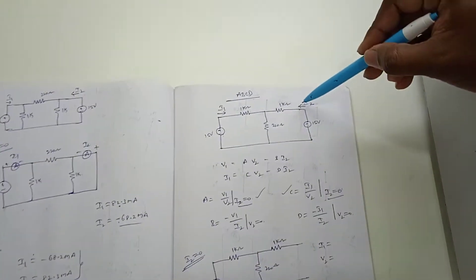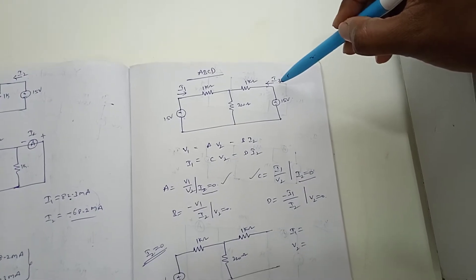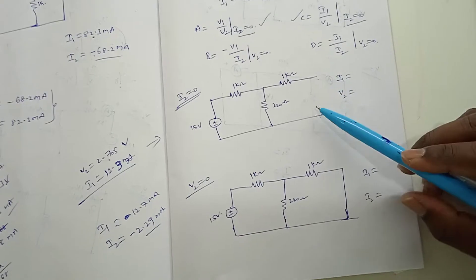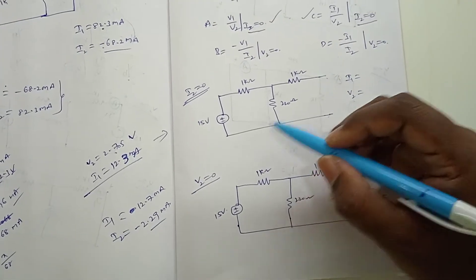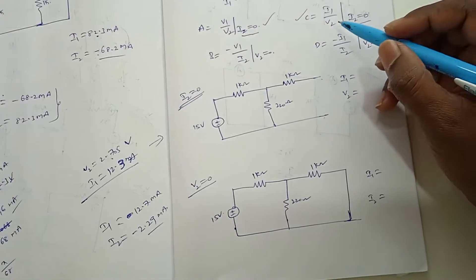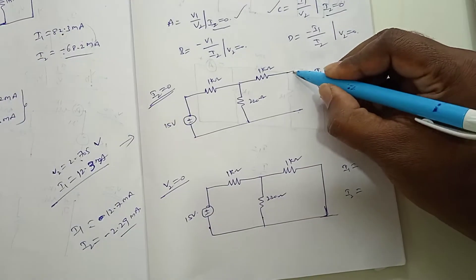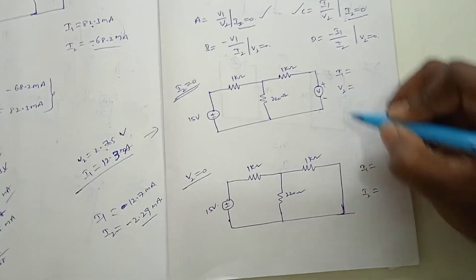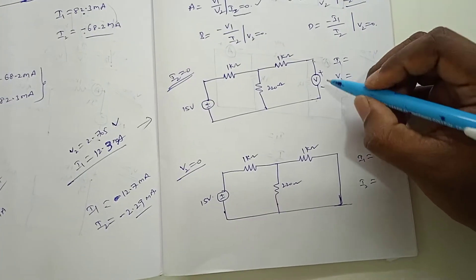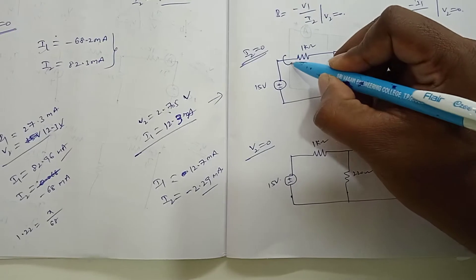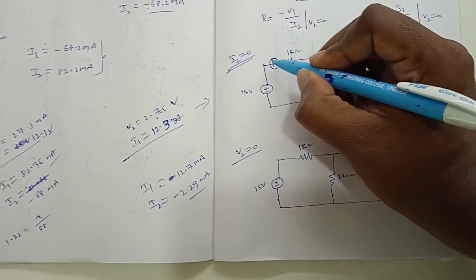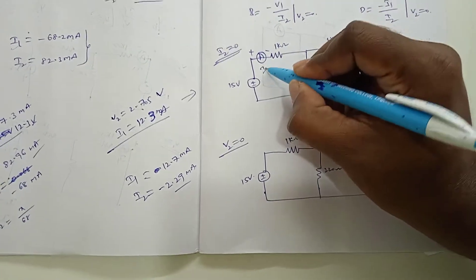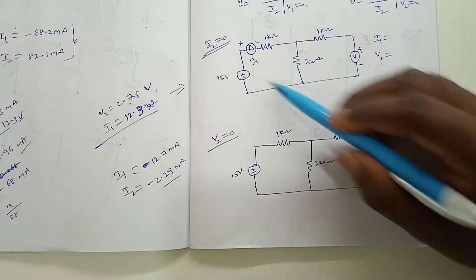When I2 equals 0, that means this current I2 should be zero, so the output port should be open circuited. We need to measure V1 and V2, so we place a voltmeter here with plus and minus — this will measure V2. We also need to measure I1, so we place an ammeter here with plus and minus.